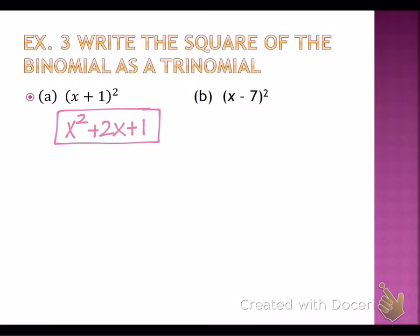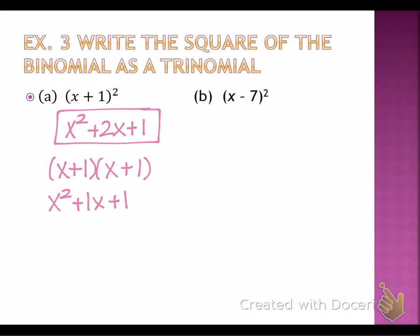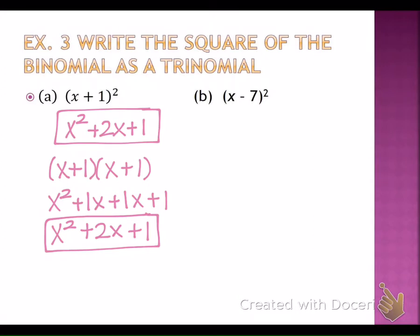Now I want to show you what happens if you do the FOIL method. X plus 1 squared is x plus 1 times x plus 1. Multiplying the first terms gives x squared; outside terms give 1x; inside terms give 1x; last terms give 1. So x squared plus 2x plus 1. You get the exact same answer with FOIL, but you can get there a lot quicker if you learn: square the first term, multiply the terms and double them, square the second term.